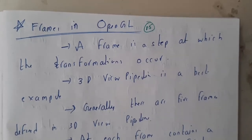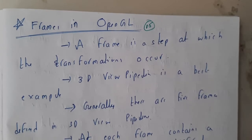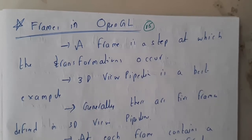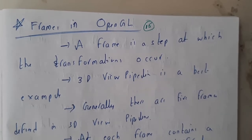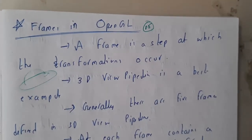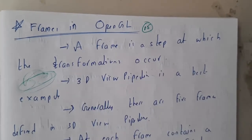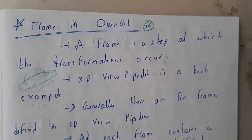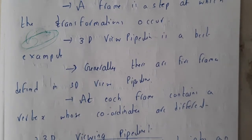Hello guys, we are back with our next tutorial. In this tutorial, let us go through frames in OpenGL. Basically, frames are nothing but whenever you do different transformations or operations on a given point or object, you get new positions of that object. If it is initially at P1, that is XYZ, and you move it to P-dash, that is X-dash Y-dash Z-dash, this is the transformation. A frame is a step at which the transformation occurs.